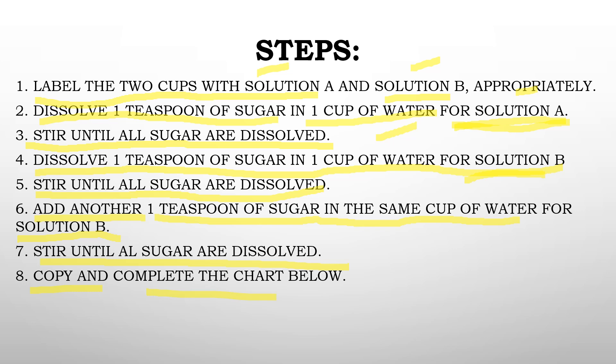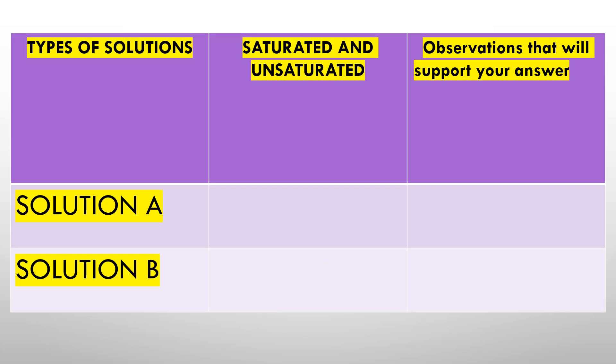Copy and complete the chart below. Column 1: types of solution. Solution A, solution B. Then saturated and unsaturated, and then observations that will support your answer. For example, solution A - is it saturated or unsaturated? Solution B - saturated or unsaturated? Then after that, you need to explain or observe. Write all your answers here.